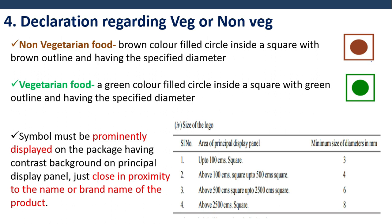The format of display in the logo area of the principal display panel: for pack area up to 100 cm², minimum diameter is 3 mm; above 100 cm² up to 500 cm², the diameter is 4 mm; above 500 cm² up to 2500 cm², it is 6 mm; and above 2500 cm², it is 8 mm.